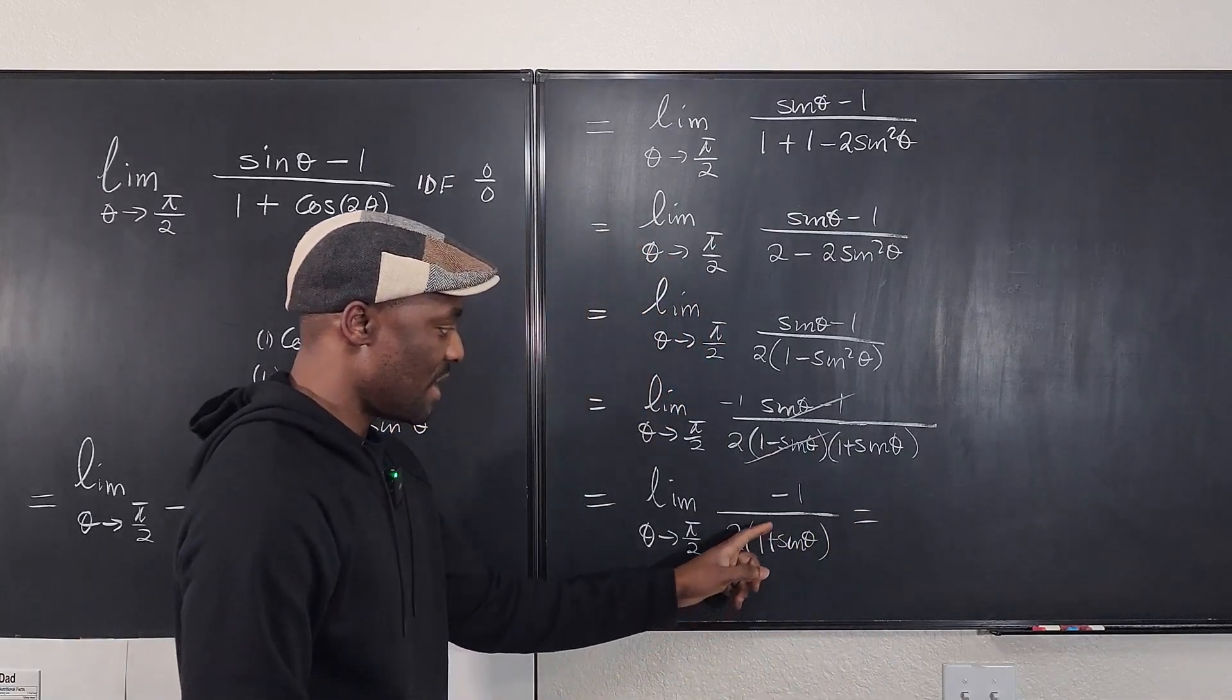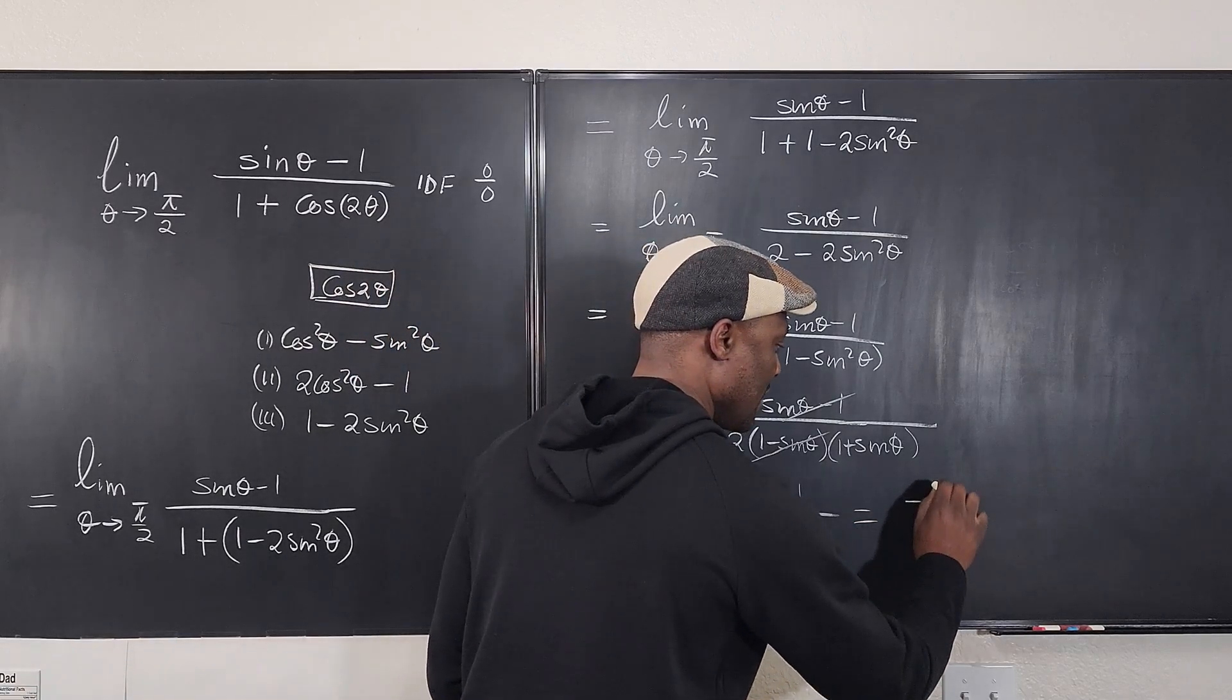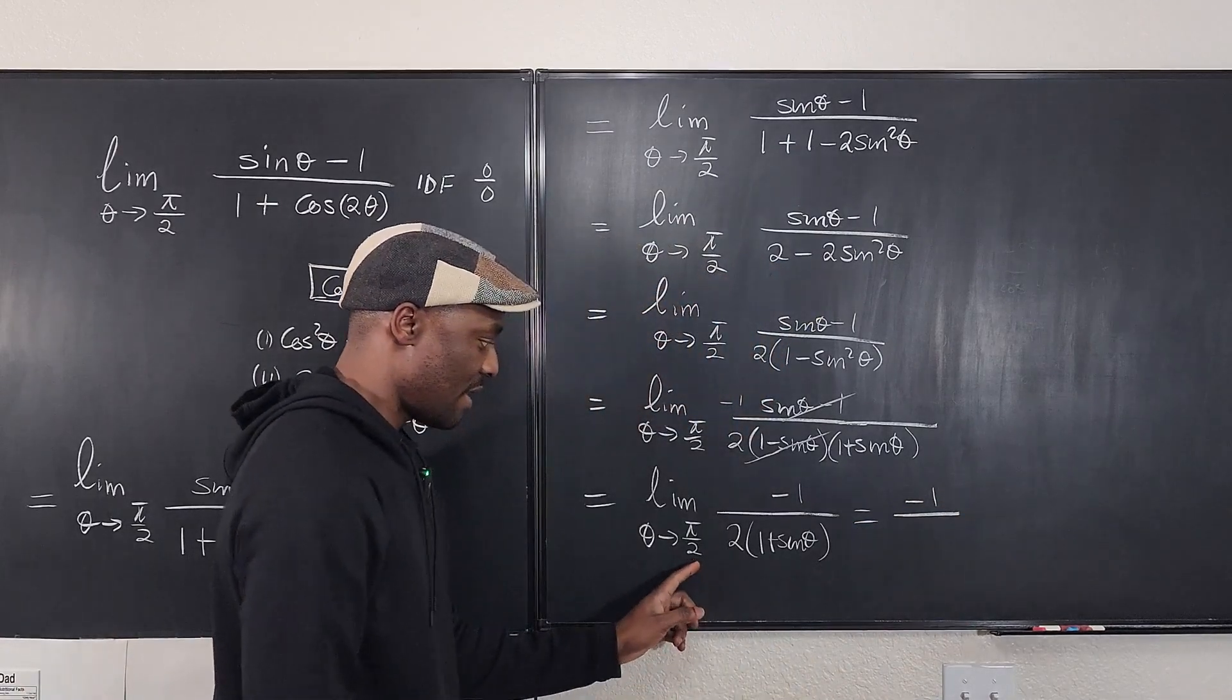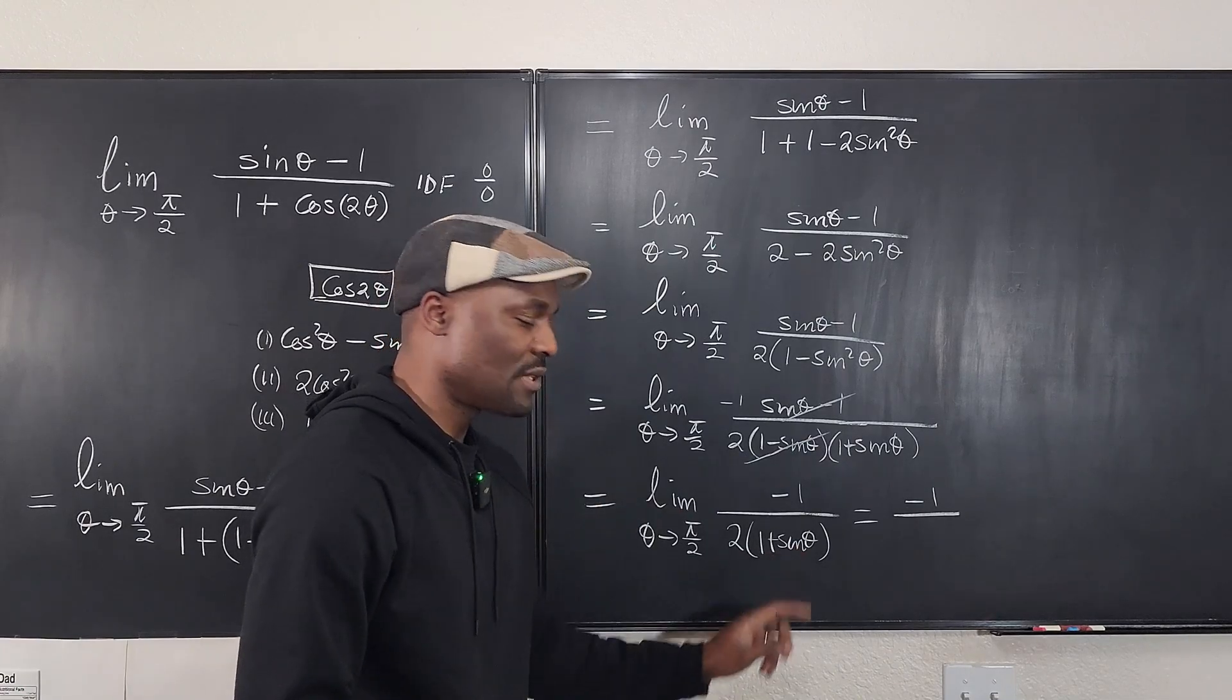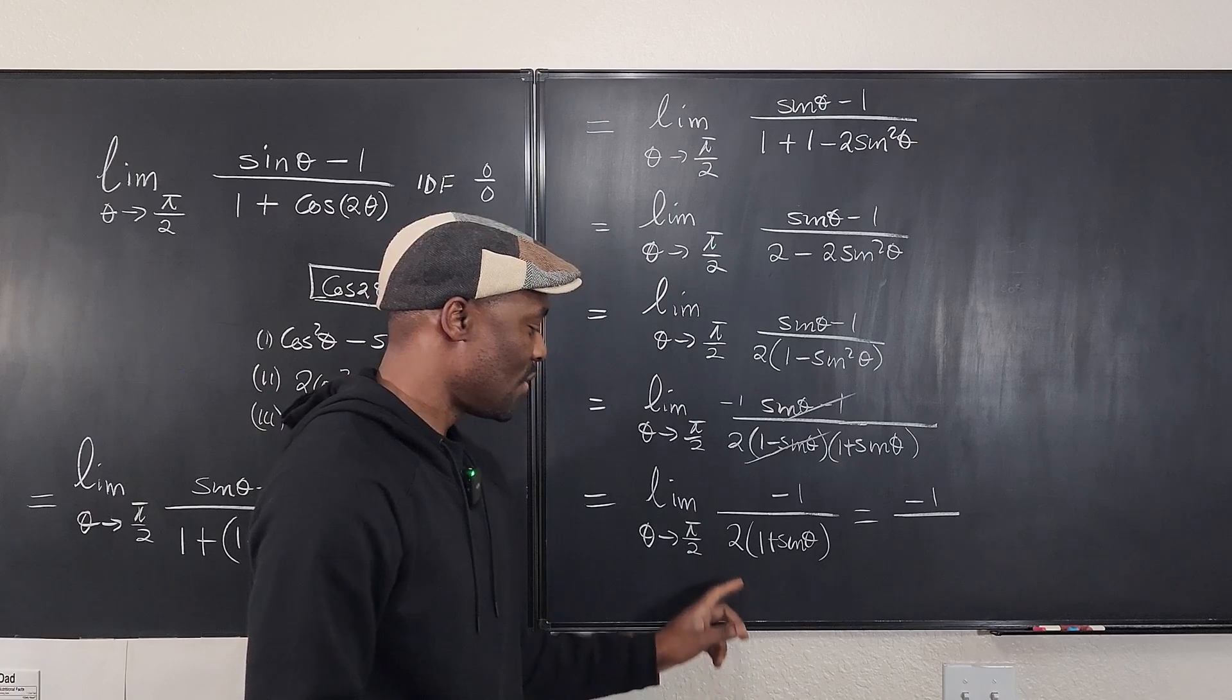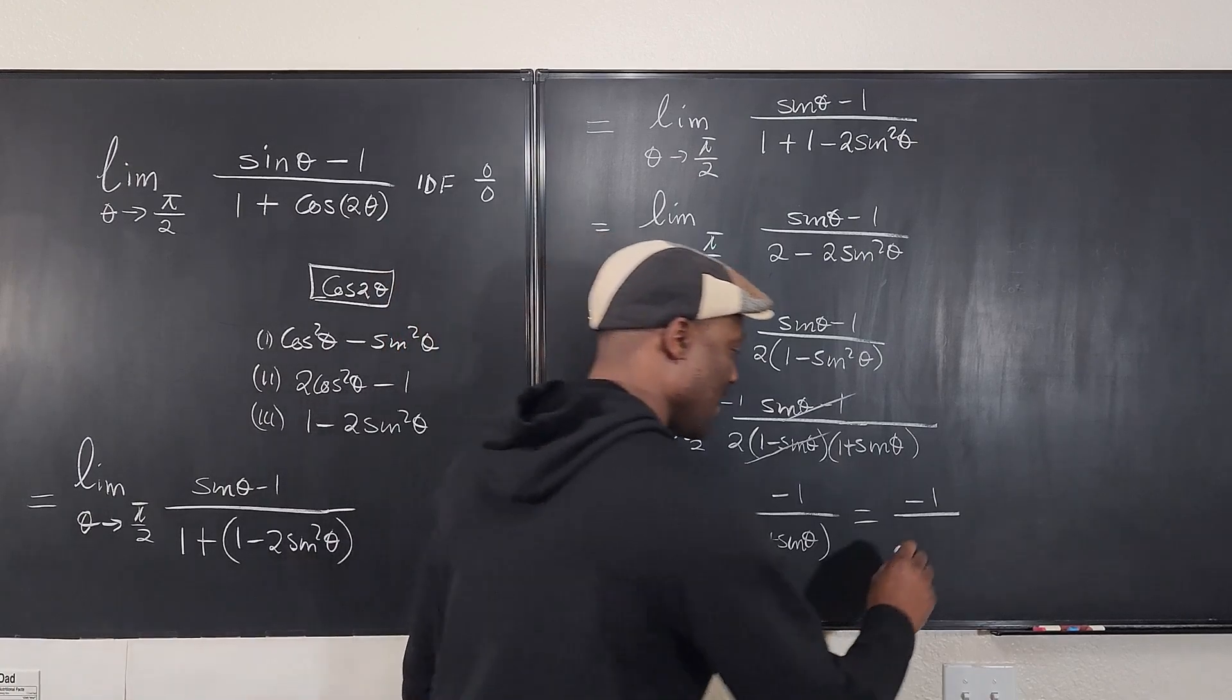Well, if we take this limit, this is going to be negative 1 over, if I plug this in here, what is sin(π/2)? It's 1. What's 1 plus 1? That's 2. What's 2 times 2? It's 4.